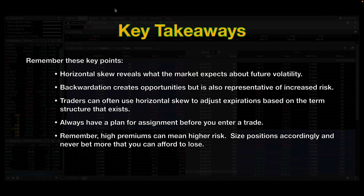Let's go over some key takeaways. Horizontal skew reveals what the market expects about future volatility. Backwardation creates opportunities, but is also representative of increased risk. Traders often use horizontal skew to adjust expirations based on the term structure that exists. Always have a plan for assignment before you enter a trade. Remember, high premiums can mean higher risk — size positions accordingly, and never bet more than you can afford to lose.